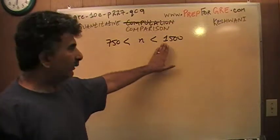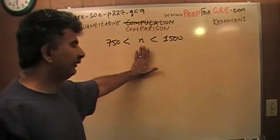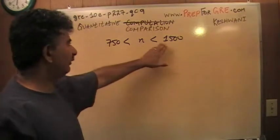That's not how one reads it. What does this say? This says that we are dealing with some quantity N, which has to be between 750 and 1500.